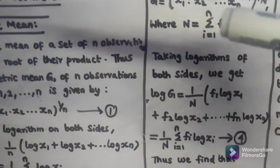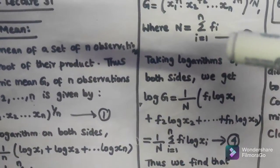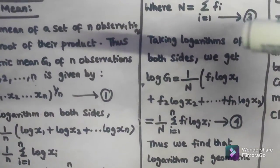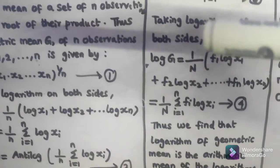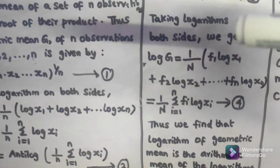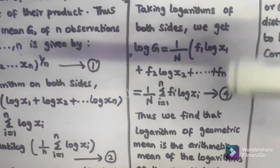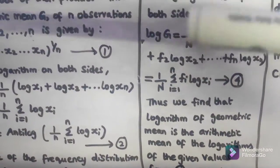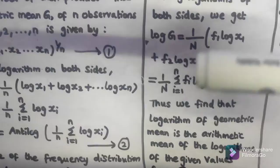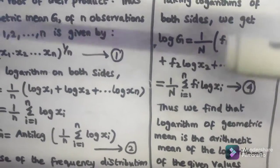Taking logarithms on both sides, we get log G = (1/N)(f1 log x1 + f2 log x2 + ... + fn log xn), which equals (1/N) Σ(i=1 to n) fi log xi.